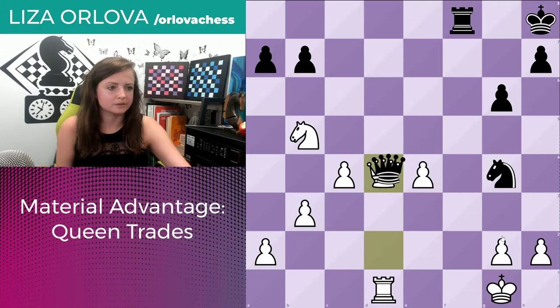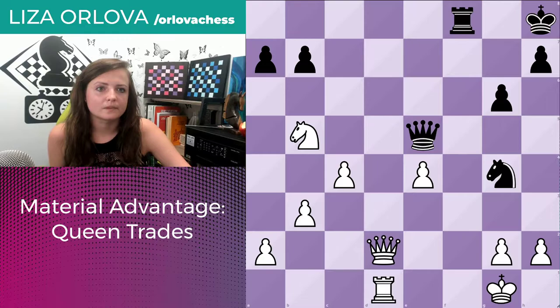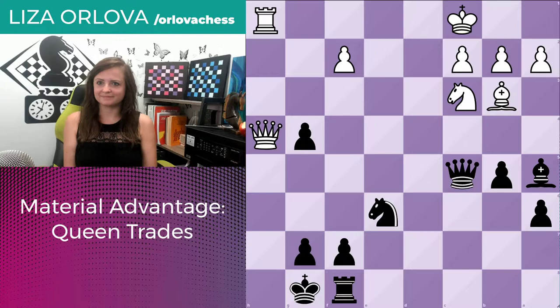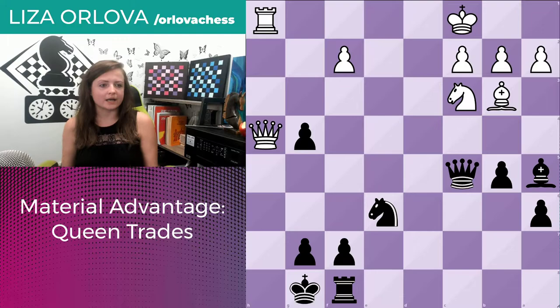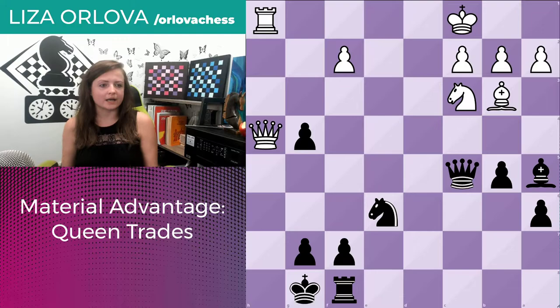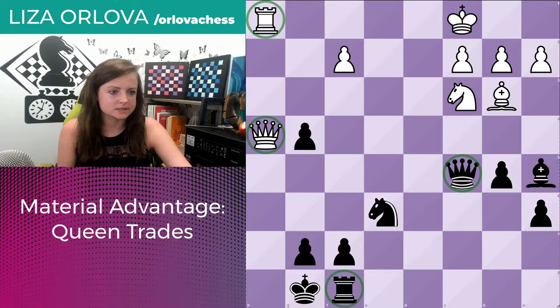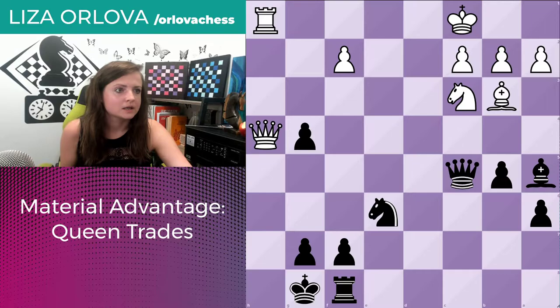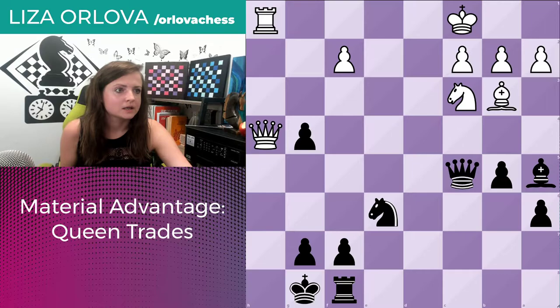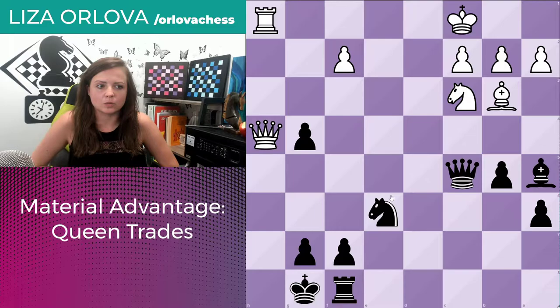Let's go on to the next example. Here, let's distinguish what type of material advantage black has. Canceling out the pieces — queen and queen, rook vs rook, knight vs knight, bishop vs bishop — black has five pawns versus four pawns. So black is up one pawn. I know one pawn doesn't seem like too much of an advantage, but when it comes to grandmasters, one pawn is enough. And even at master strength, just being up one point should be more than enough to win the game.